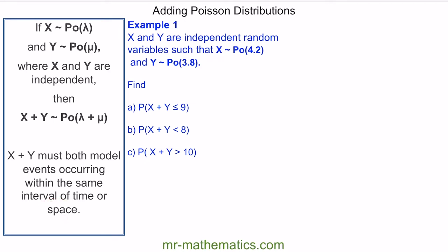We'll work through example one. We're given that x and y are independent random variables, and because they're independent we can use this property. X is distributed as a Poisson with parameter 4.2, and y is a Poisson with parameter 3.8. Because they're independent, we can define x plus y as being distributed with a Poisson of lambda 8 — the 8 comes from adding these two together.